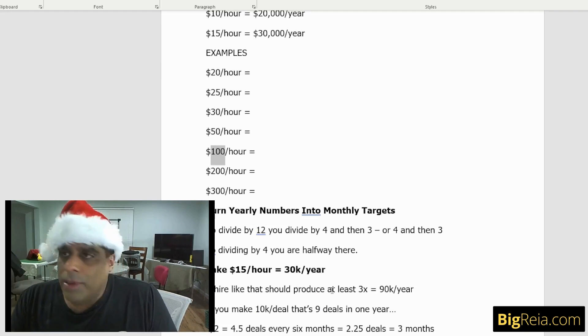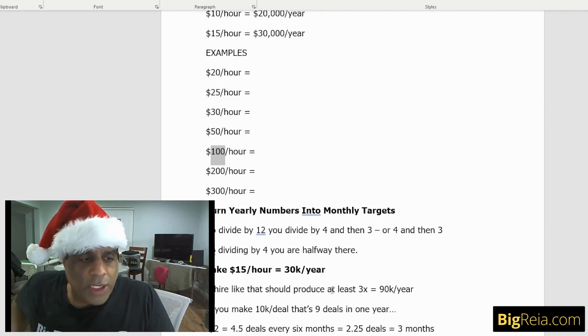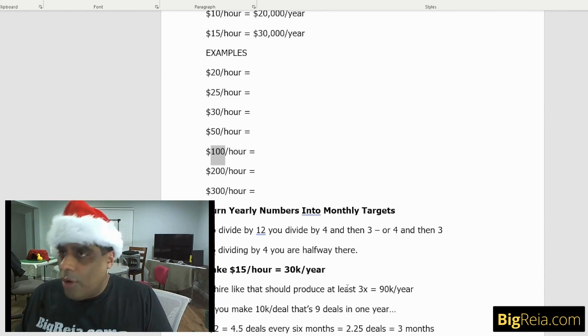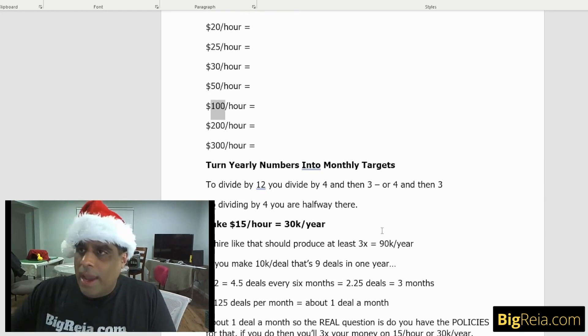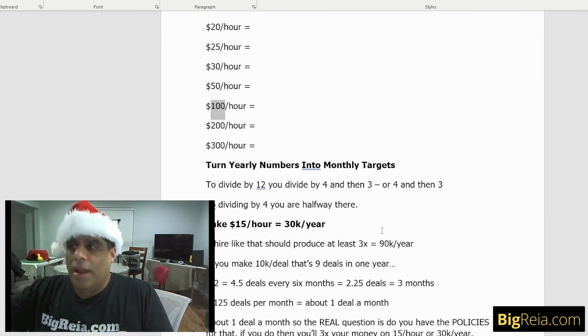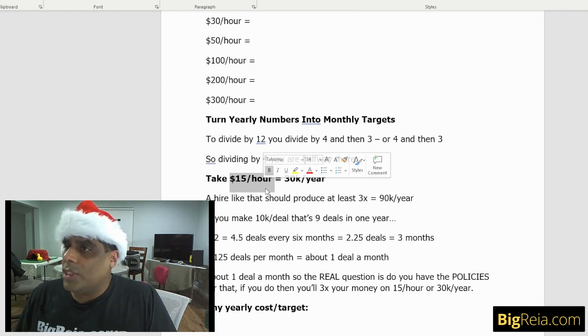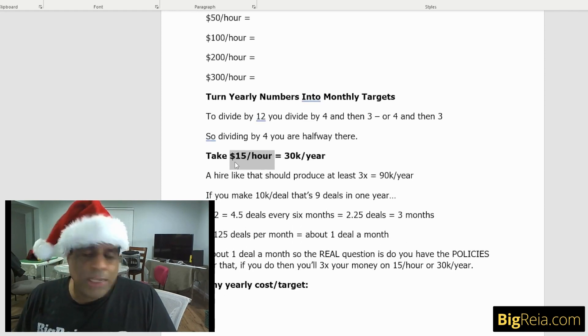So now we turn our yearly numbers into monthly targets. If we're ever trying to hire, whenever we want to divide something by 12 to find out what the payments are going to be, really something divided by 12 is really something divided by four and then by three. So if we divide it by four, we're already halfway there. But let's take $15 an hour. $15 an hour is how much per year? 15 times two is $30,000 a year. So if you're paying someone $15 an hour, they're making $30,000 a year or $2,500 a month.